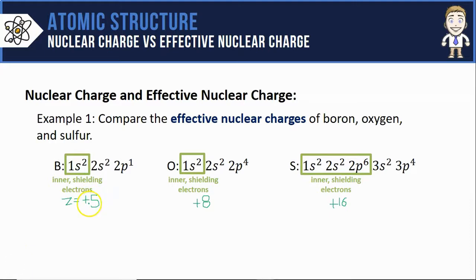So boron's nucleus has a plus 5 charge, but there's two core electrons to shield that plus 5 charge, resulting in an effective nuclear charge of plus 3. For oxygen and its two shielding electrons, subtracting those out tells me that its effective nuclear charge is plus 6. And sulfur's a much larger atom and has a lot more shielding electrons, 10 of them in fact. Subtracting out those 10 shielding electrons means that sulfur also has an effective nuclear charge of plus 6.